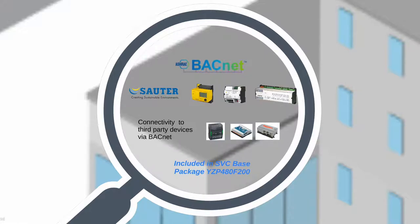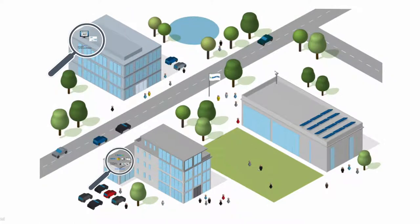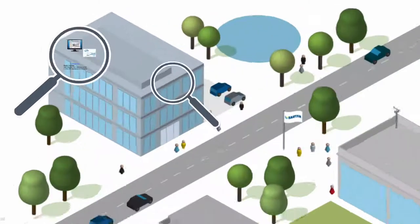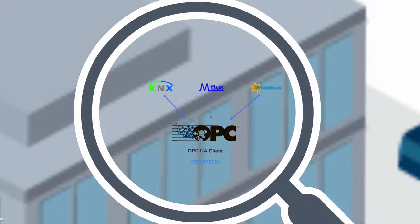It means that devices from other manufacturers can also be integrated into the system. With OPC UA, Sauter Vision Center supports the new protocol standard for building automation and industrial control. Current and future devices are connected with Sauter Vision Center through the OPC server.